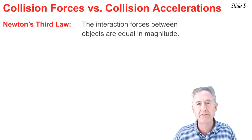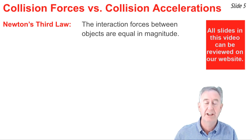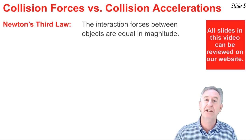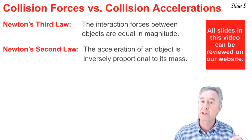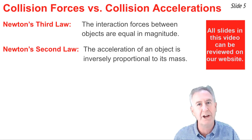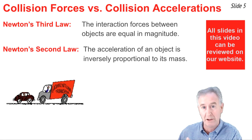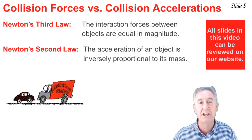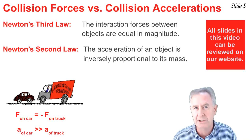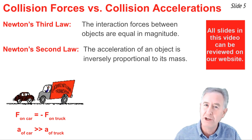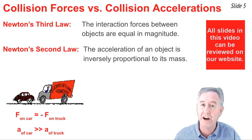Students often have difficulty with this Newton's third law idea, and usually it's because of confusion with Newton's second law. Newton's third law describes the interaction forces between objects in a collision as being of equal magnitude, but Newton's second law describes the result of those forces — the acceleration — as being inversely proportional to the mass of the object. So if we consider Newton's third and second law applied to the collision between the truck and the car, the forces are the same on the car as on the truck, just opposite directions. But the acceleration of the car is considerably greater than the acceleration of the truck because of the car's smaller mass.